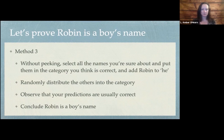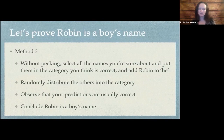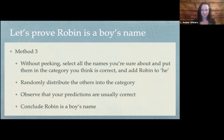Here's a third method. Without peeking again, we're going to select all the names that we're sure about and put them in the category we think is correct. Additionally, we're going to take Robin and stick it in the 'he' category, because maybe we know about Robin Hood and Sir Robin in the Knights of the Round Table. Then we'll randomly distribute the others and observe that our predictions are usually correct. And there we have proven that Robin is a boy's name. No self-respecting data scientist would ever do such a thing.